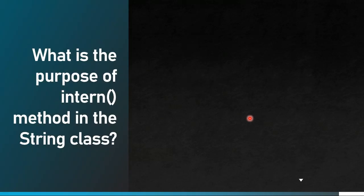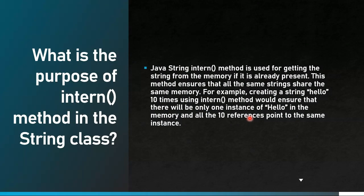Next question: what is the purpose of the intern() method in the String class? This is an important interview question, especially for people with two to four years of experience. The Java String intern() method is used to get the string from memory if it is already present. It ensures all same strings share the same memory — for example, creating the string 'hello' ten times using intern() would result in only one instance in memory, with all ten references pointing to the same instance.